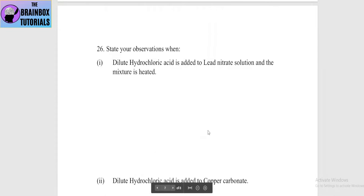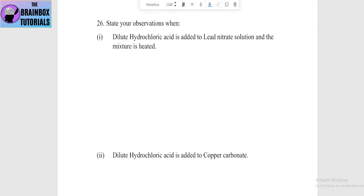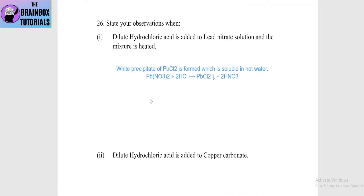Next: state your observations when dilute hydrochloric acid is added to lead nitrate solution and the mixture is heated. When mixed with lead nitrate solution, a white precipitate of lead chloride (PbCl2) is formed. On heating, the white precipitate dissolves — lead chloride is soluble in hot water.